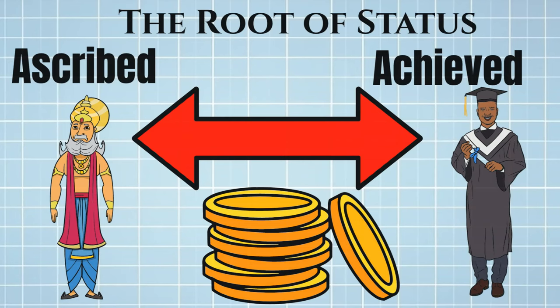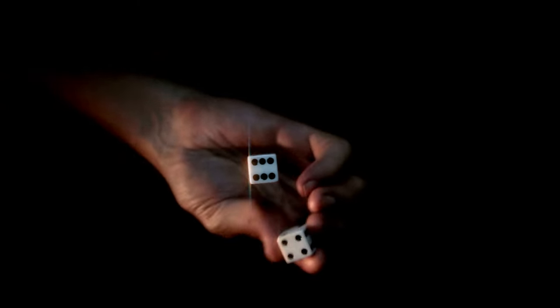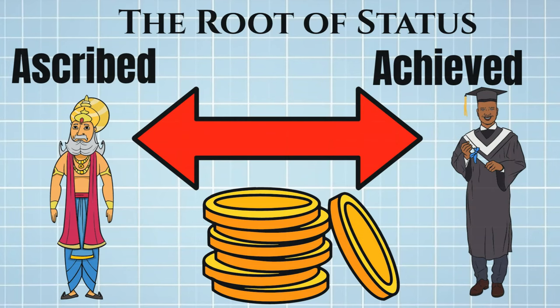So in defining the status system of your world, that is your first exercise: what is the root of your status? Is it an ascribed status system, and if so, what is the ascribing attribute? Birth is the common one, but don't overlook something like luck — maybe your culture worships a god of luck and when a child is born they roll a dice. Ascribed is anything the character doesn't have control over. Or maybe your culture has an achieved status system — physical, mental, magical, or something else? Note down both ascribed and achieved elements as needed.